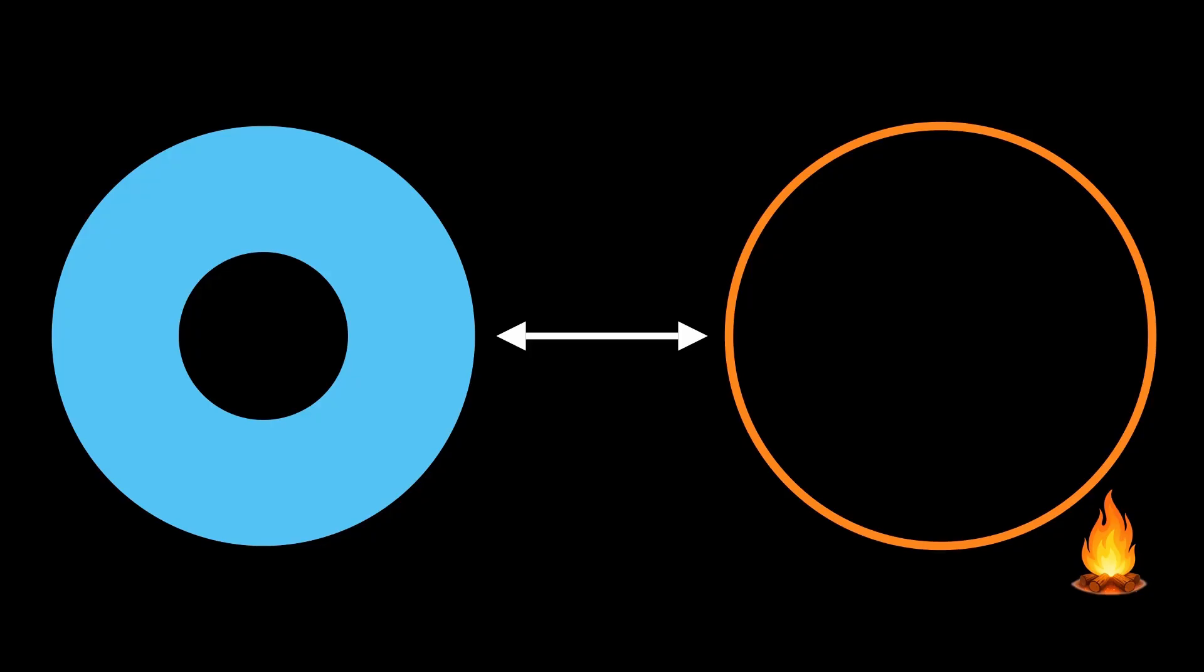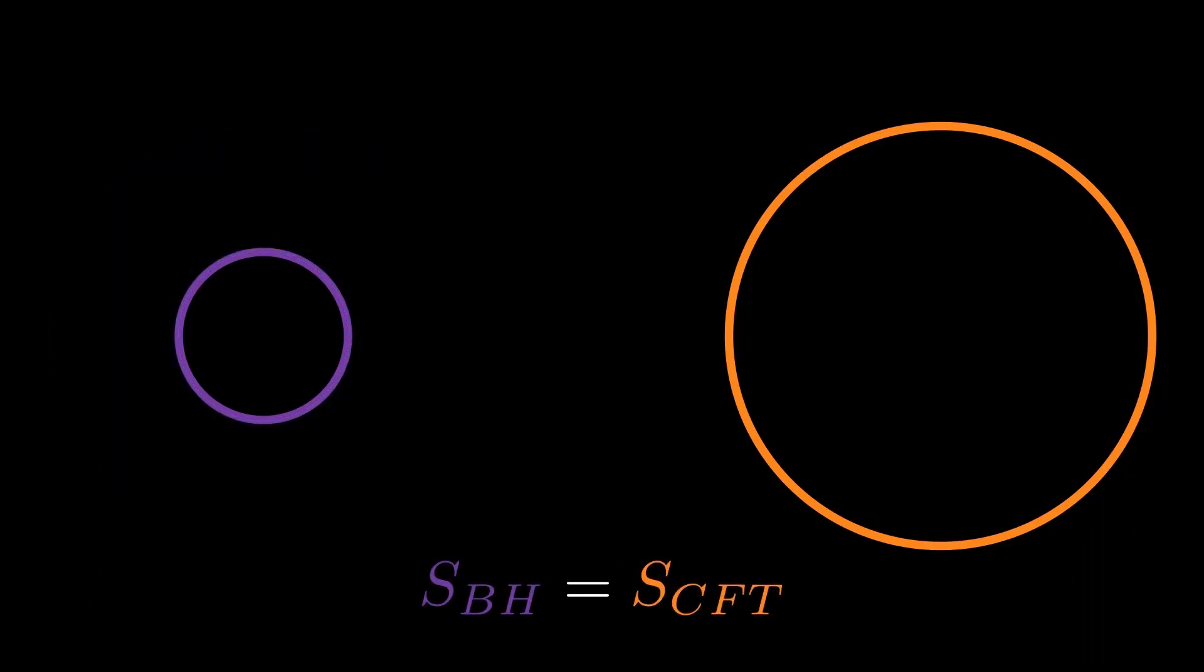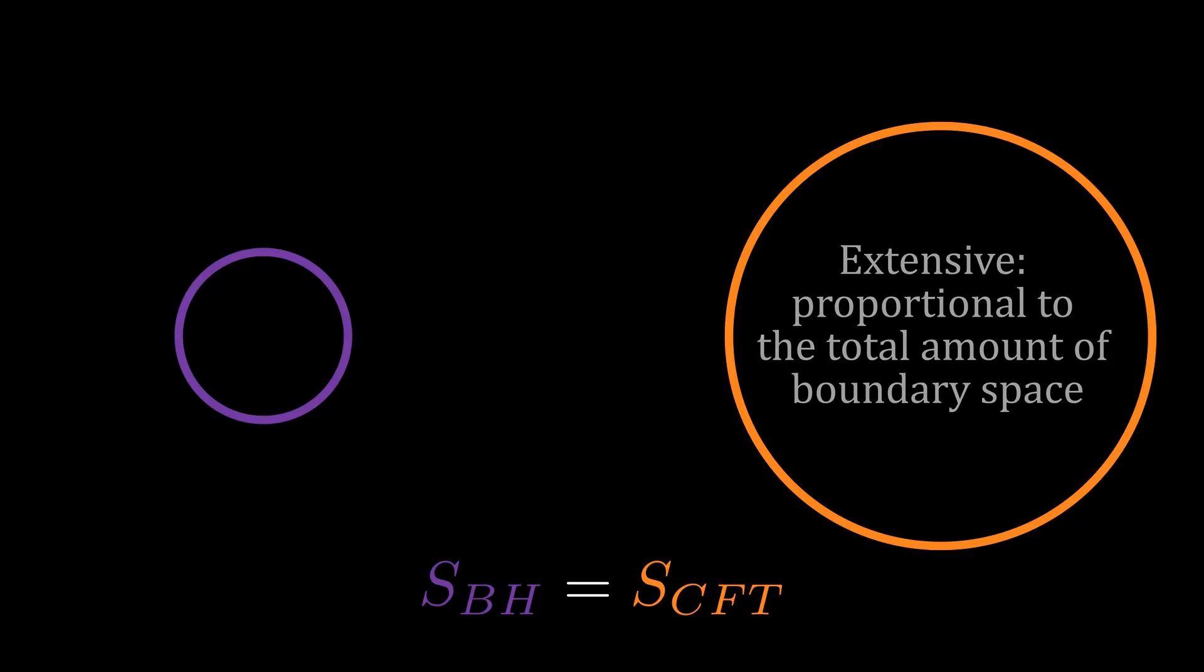Now, black holes are famously thermal objects, so this connection again makes a lot of intuitive sense, but we can ask for more detailed checks. One such check is provided by the entropy of the black hole. General arguments going back to Bekenstein and Hawking show that a black hole has a thermal entropy and that this entropy is proportional to its horizon area in Planck units. What is the CFT dual of this? Nothing but the thermodynamic entropy of the CFT. Notice in particular how the dimensions work. The black hole's entropy is, unusually, proportional to its surface area rather than its volume. But because the CFT lives in one less dimension than the bulk spacetime, surface area in the bulk has the same dimensions as the volume in the boundary. So we recover the usual extensive behavior of thermal entropy in a quantum field theory.